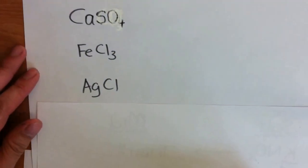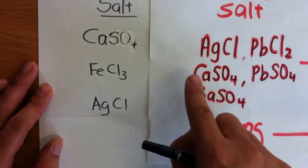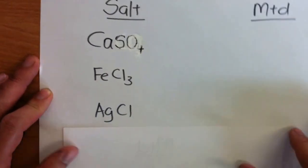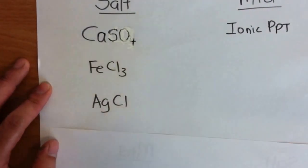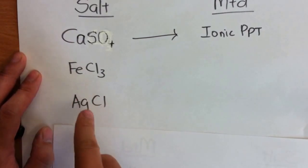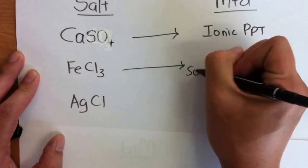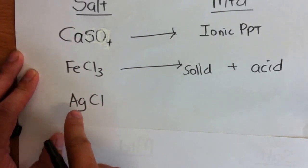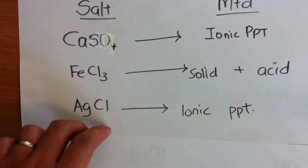Next, calcium sulfate. Calcium sulfate is not group 1, but calcium sulfate is one of the 5, so I will use the method known as ionic precipitation. Now these two — iron 3 chloride and silver chloride — why not spend some time and decide which method to use. Iron chloride is not group 1 and not one of the 5, so I will use the method known as ionic precipitation.